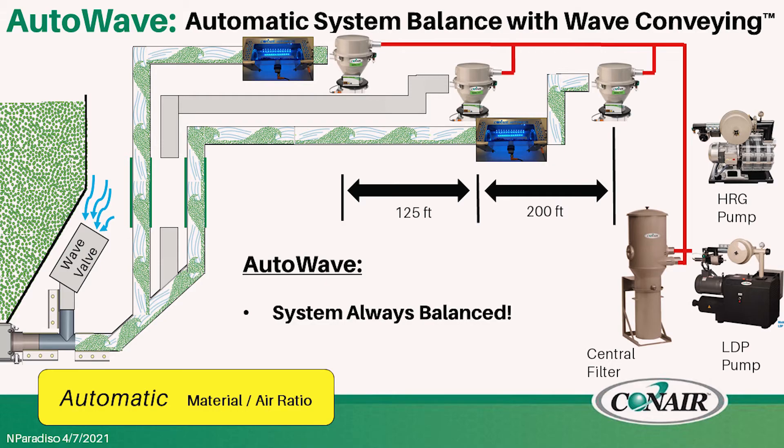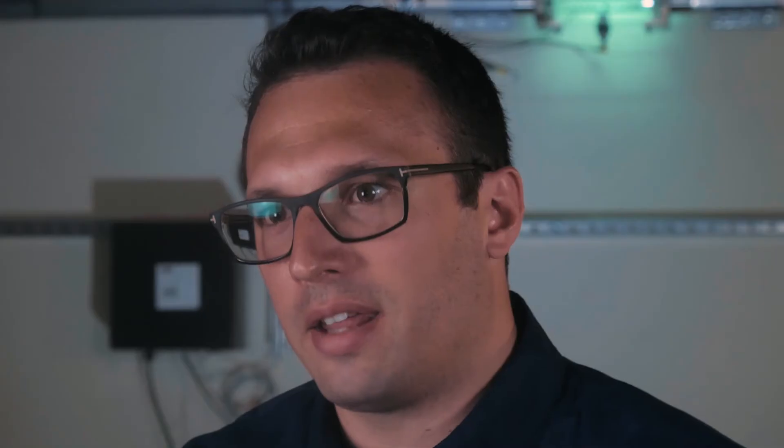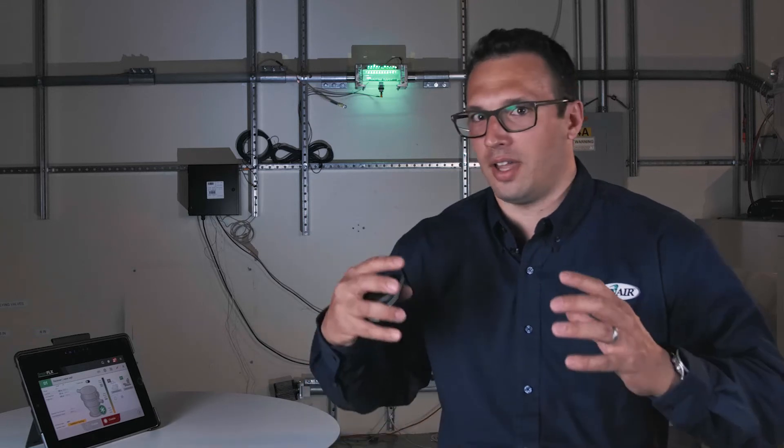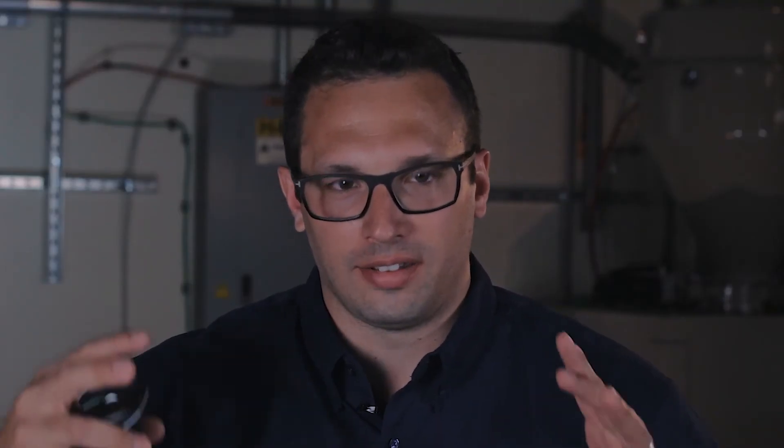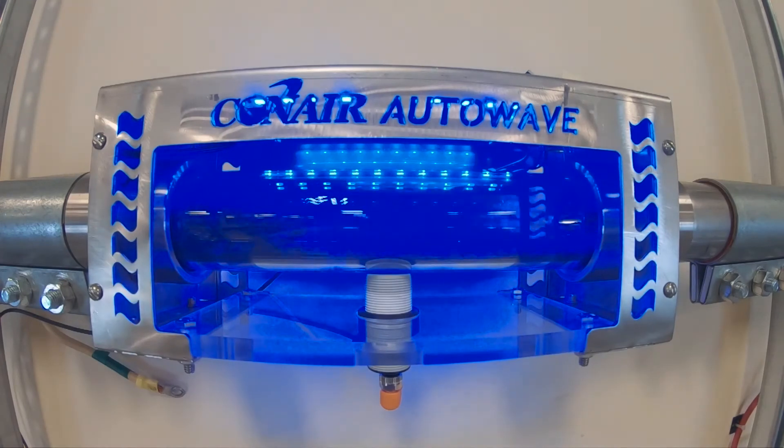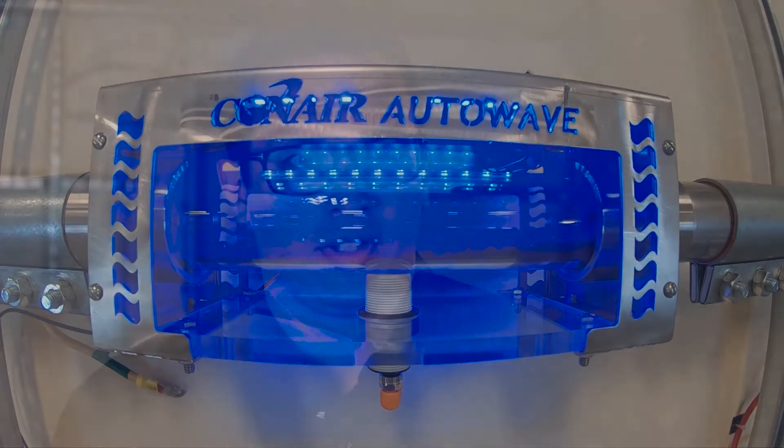When you go to convey to that receiver the variables of your pneumatic conveying system are different, especially if you're in wave conveying. Because again this isn't dilute phase where it's just convey as fast as you can get it to the receiver and move on to the next receiver. Wave conveying is in a deep vacuum state and it's in a controlled environment that really relies heavily on that wave valve being set up properly.